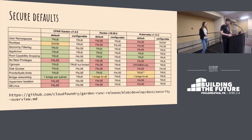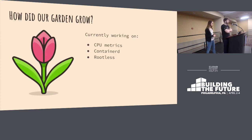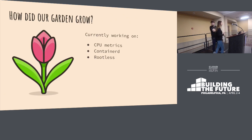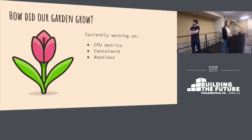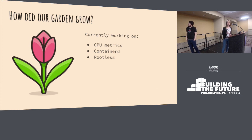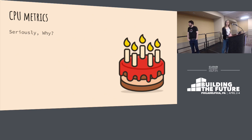Now over to Julia to talk about what is actually new. So now you know what Garden is — but how did our Garden actually grow in the last few months? We've been actively working on three main tracks: CPU metrics, ContainerD, and rootless. I'm going to quickly go through the first one, which is CPU metrics.